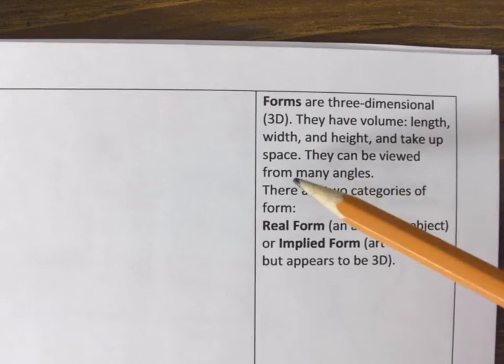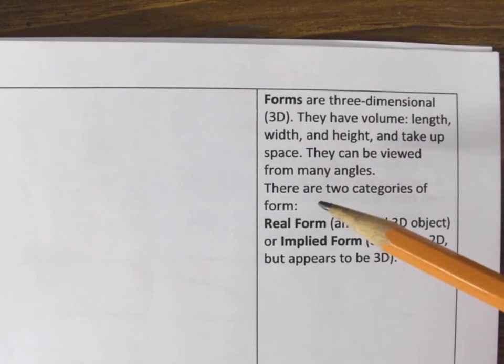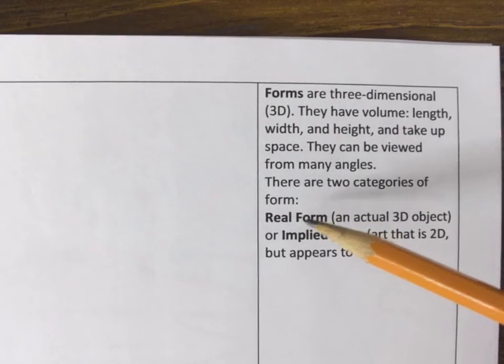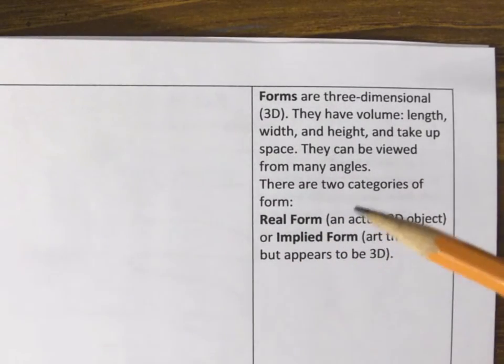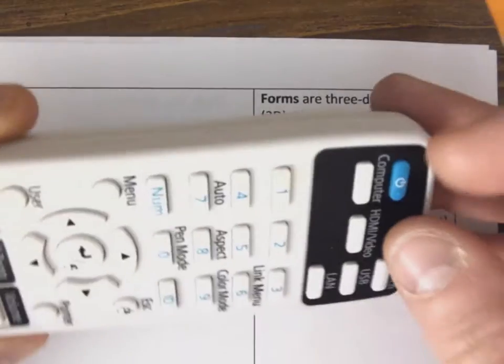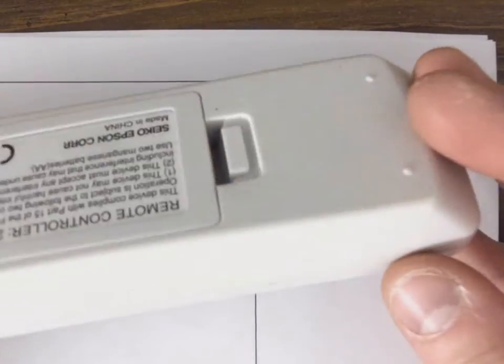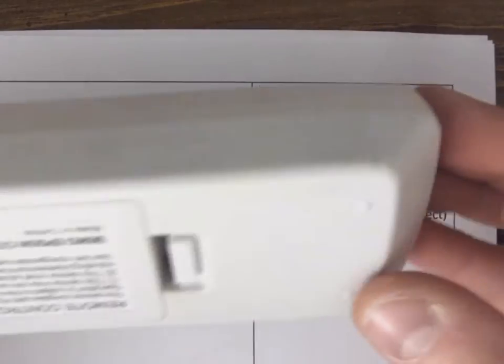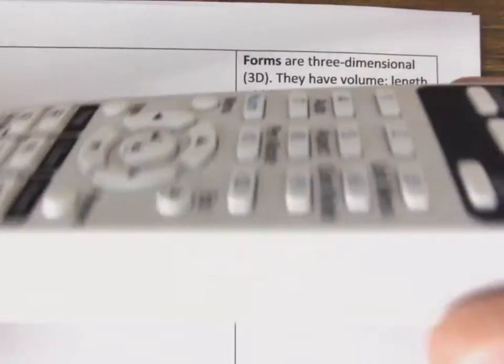They can be viewed from many different angles, and there's two categories of form. Just like texture, you can have real form. So you can actually pick up an object like this remote. It's got different sides to it. It's got form. You can sculpt something and you can pick it up, and if it has different sides to it and you can feel it, right? It can actually be 3D.